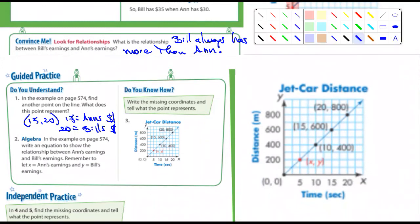Number two. In the example on page 574, write an equation to show the relationship between Ann and Bill's earnings. So X is Ann's earnings, and it's always less than $5. So X plus 5 equals what? It says write an equation. So I've used the X, I'm going to end with the Y. X plus 5 equals Y. Remember, an equation always has an equal sign in it. So X plus 5 equals Y. There's a simple equation.